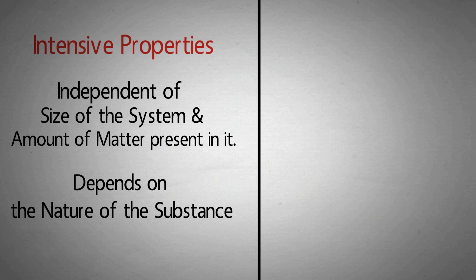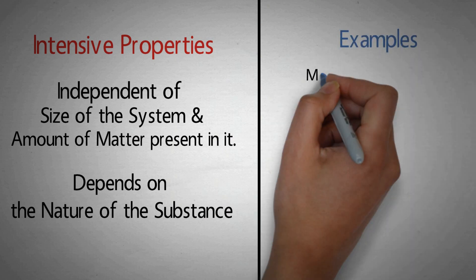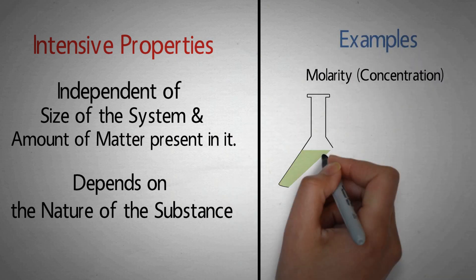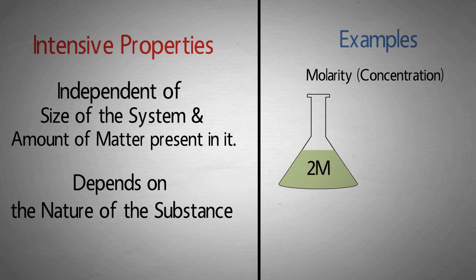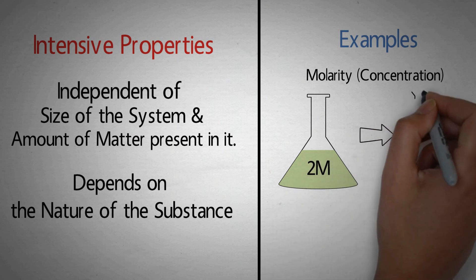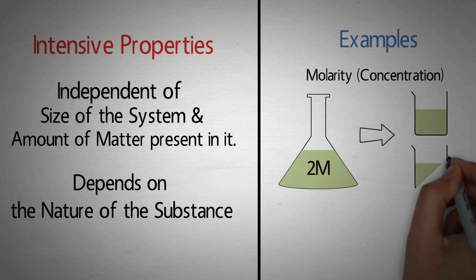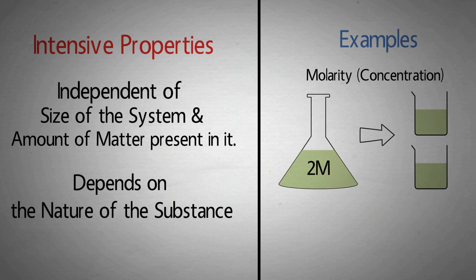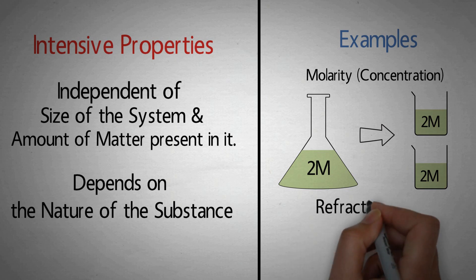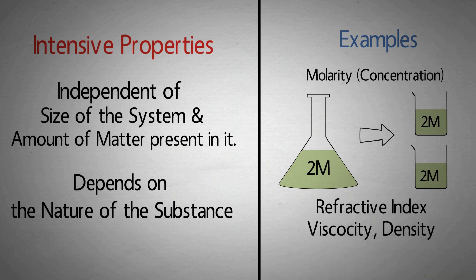अब intensive properties के examples। First one is molarity या concentration। हमारे पास 2 molar HCl acid है — अगर हम acid को दो अलग-अलग beakers में डाल दें, तो molarity में कोई difference नहीं आएगा। It depends upon the nature of the substance only, not on the size of the system. इसी तरह refractive index, viscosity, density भी intensive properties होंगे। And what about pressure?